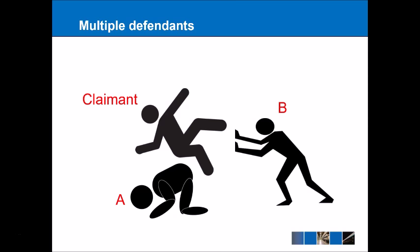If the claimant fell and cracked his head on the pavement, suing A and B: A might say he was just crouched on the pavement and it was B who pushed the claimant, so he's not responsible. Similarly, B would say he just pushed the claimant, and it was A crouching on the floor that caused the fall. A strict application of the but-for test means technically neither A nor B would be responsible — which is clearly unfair.